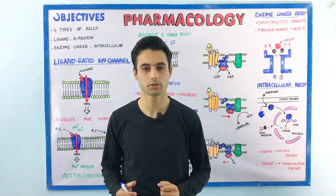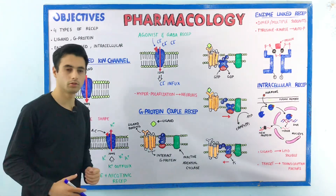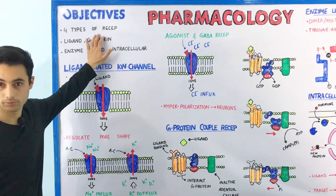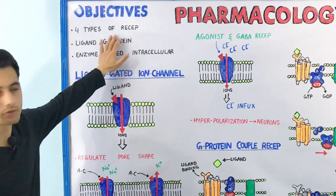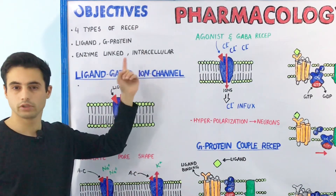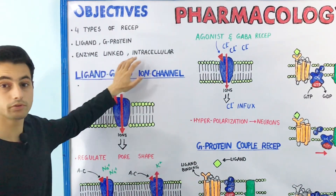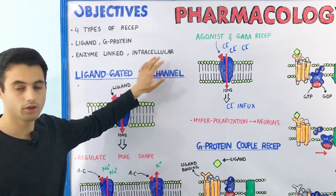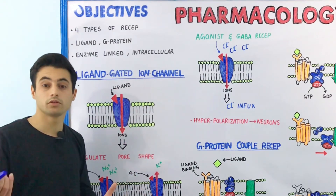Hey everyone, this is Dr. Kazi, and in this video we are going to learn about the four major types of receptors which are important in pharmacology. These are the ligand-gated ion channels, the G-protein coupled receptors, the enzyme-linked receptors, and the intracellular receptors. We are going to study how these receptors perform their action when a drug binds with them.